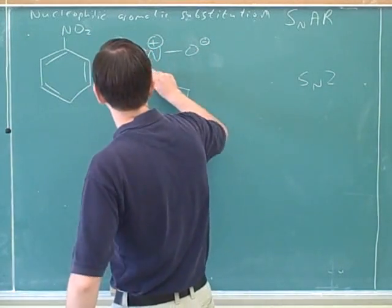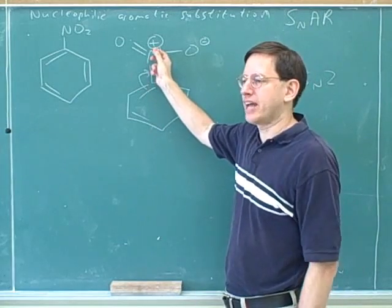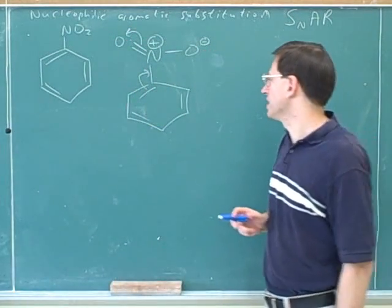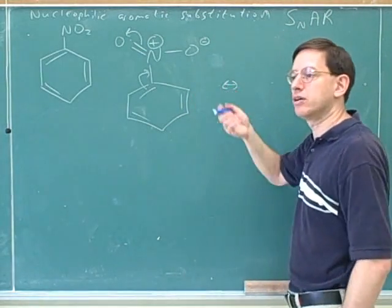We can move these pi electrons towards the nitrogen. However, the nitrogen already has a full octet. So we must make room by moving these electrons away as well. Remember, use resonance arrows.